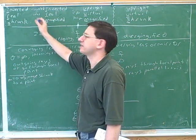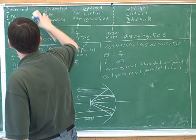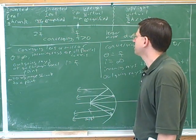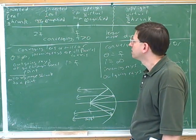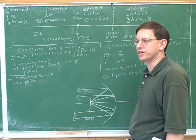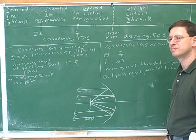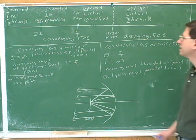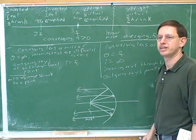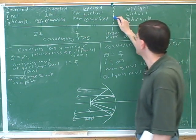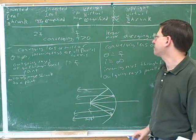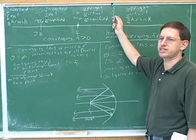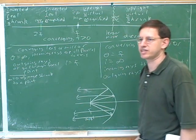This case is in your handout. The key thing is: if you want an image that's the same size as the object, put it at exactly twice the focal point. Also, if you put the object right on top of the lens or mirror — which is also on the border between magnified and shrunk — it would again be the same size. In reality you can't do this, but it means that the closer the object is to the lens, the closer the image size is to the object size.